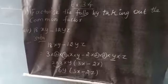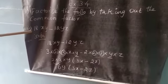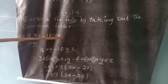So we take out the common factor, then we write the balanced term. First substitution: 18xy minus 12yz.